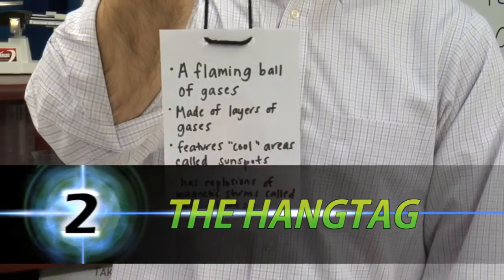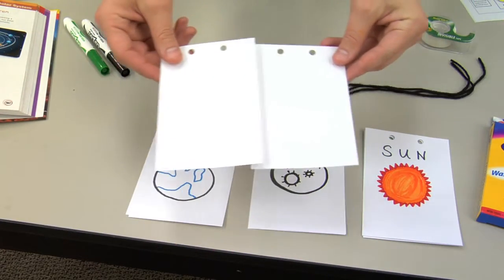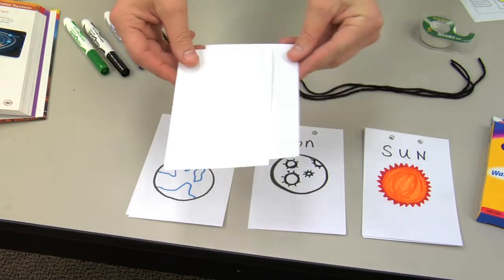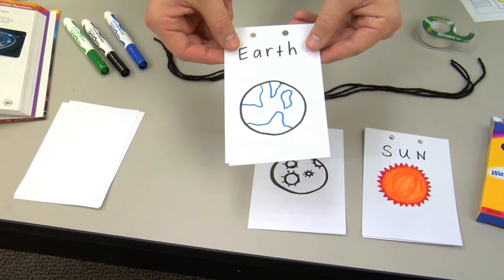Here's how you make the hang tag. Use two index cards. On the first card, students draw the celestial object of their choice, illustrating its physical characteristics with colored pencils or markers.